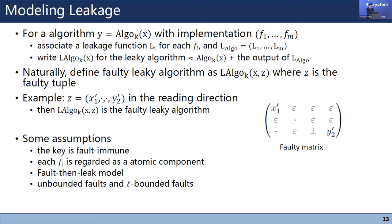We also make several assumptions: the key is fault-immune (no related-key attacks considered); each f_i is an atomic component so we do not consider faults inside these small functions. We consider both unbounded faults — the adversary can inject any number of faults — and ρ-bounded faults, where the adversary can inject at most ρ faults.